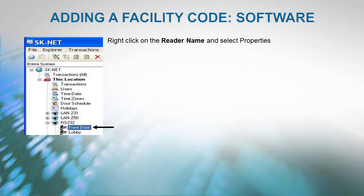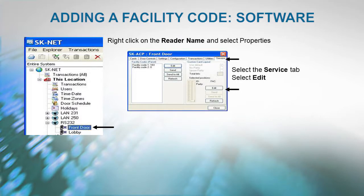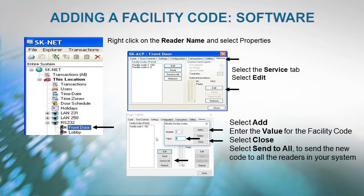Select Add, enter the value for the facility code, select Close, and finally select Send to all. This will send the new code to all the readers in your system.